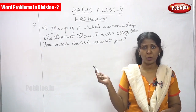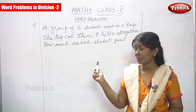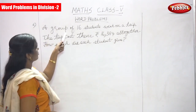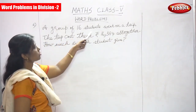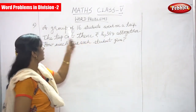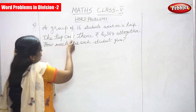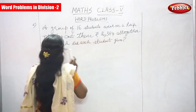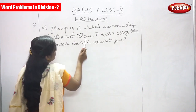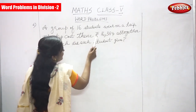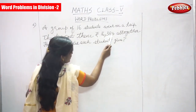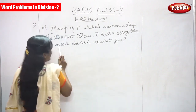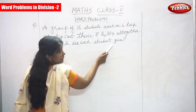We will do one more word problem in division. Let's start. A group of 16 students went on a trip. The trip cost them Rs. 16,384 altogether. How much did each student give?